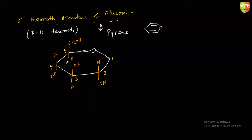Draw a six-membered ring with oxygen in the ring and start from the second carbon. OH on the right in the cyclic hemiacetal structure means OH on the bottom in the Haworth structure. Then alternate. The sixth carbon — CH2OH — is not a member of the ring. On the first carbon, if OH is on the bottom, it is alpha; if OH is on the top, it is beta. So if we write OH on the bottom and H on the top at C1, this is alpha D-glucose. If OH is on the top and H on the bottom, it is beta D-glucose.